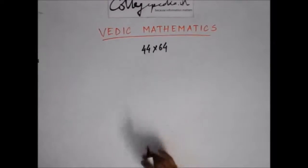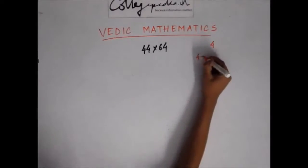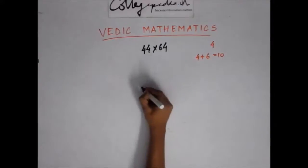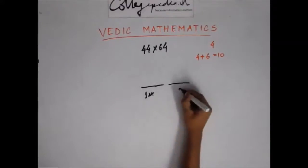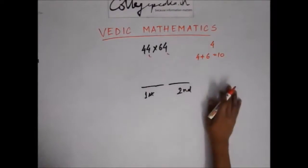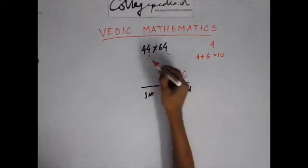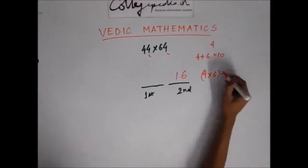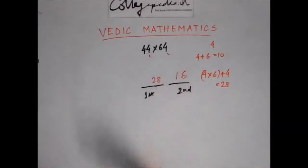For example, 44 multiplied by 64. Here the last digit is common, which is 4, and the first digits — 4 and 6 — add up to 10. The trick is that the answer will lie in two parts. For the second part, multiply the last digits: 4 × 4 = 16. For the first part, multiply the first digits of both numbers and then add the common digit 4, giving 28. So the answer is 2816.